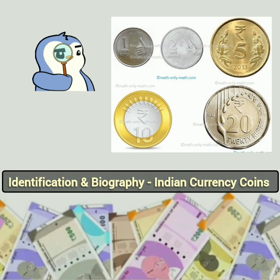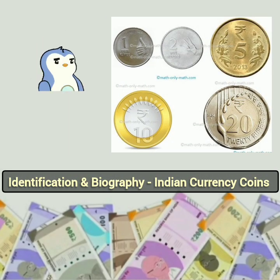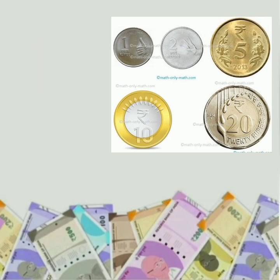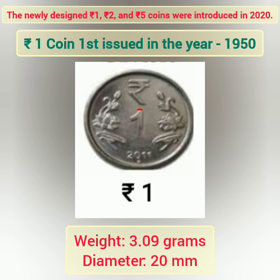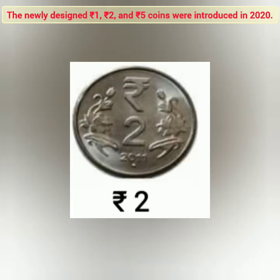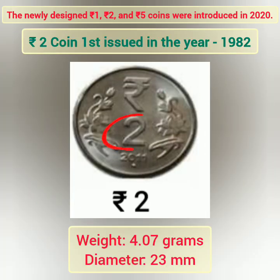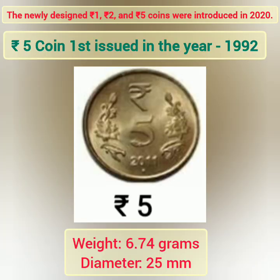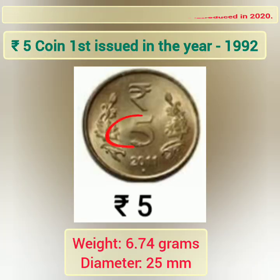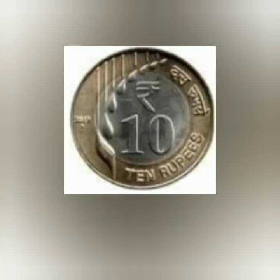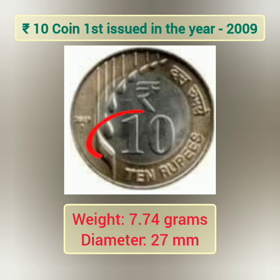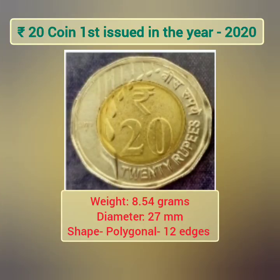Identification and biography of Indian currency coins. This is a 1 rupee coin. This is a 2 rupee coin. This is a 5 rupee coin. This is a 10 rupee coin. And this is a 20 rupee coin.